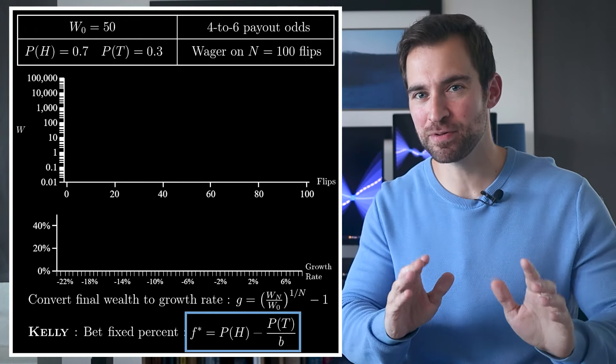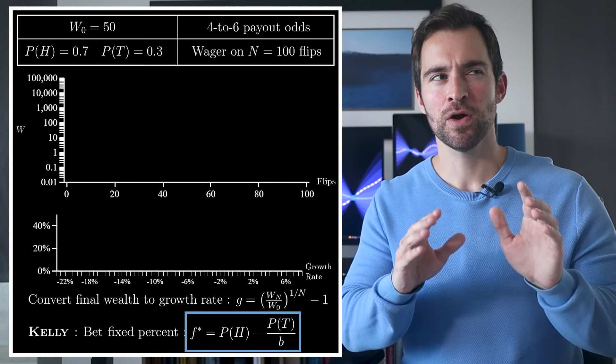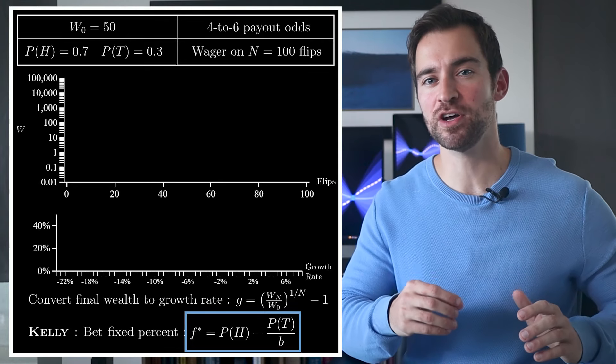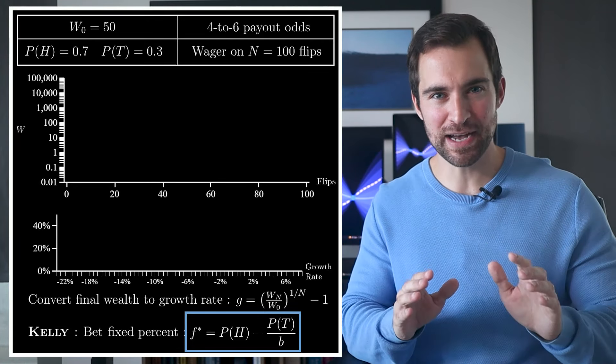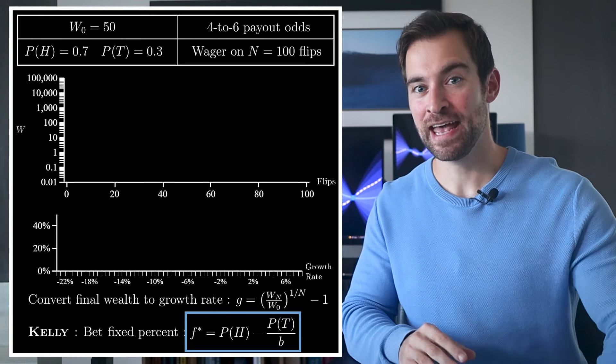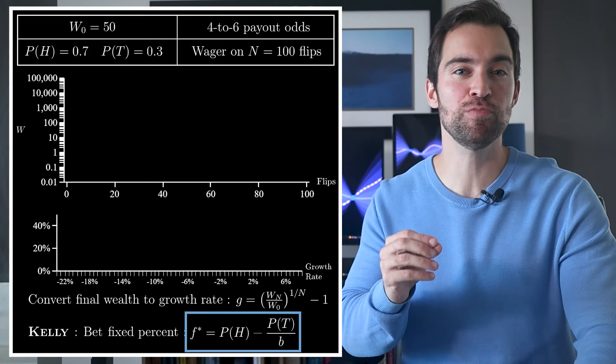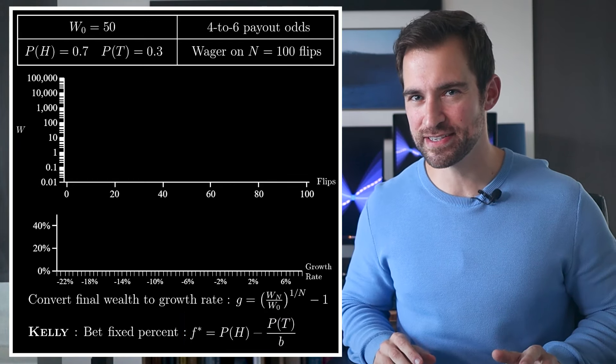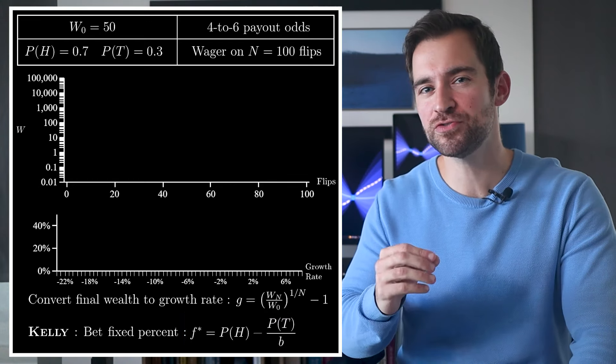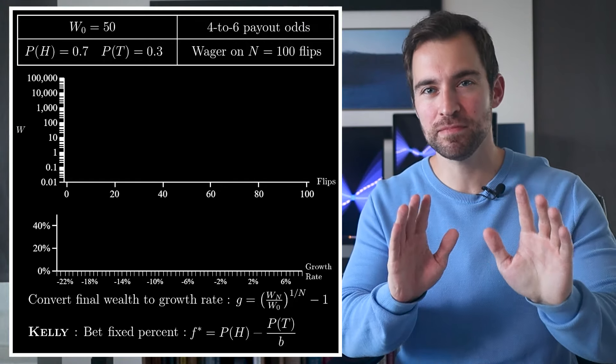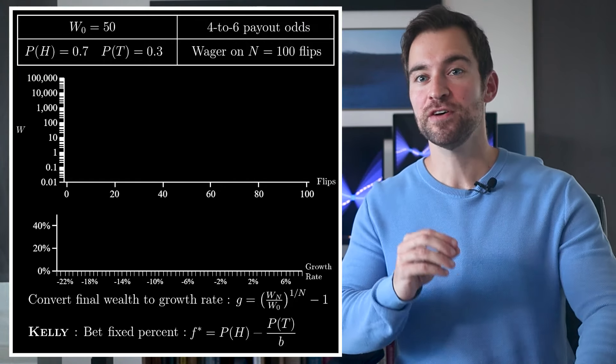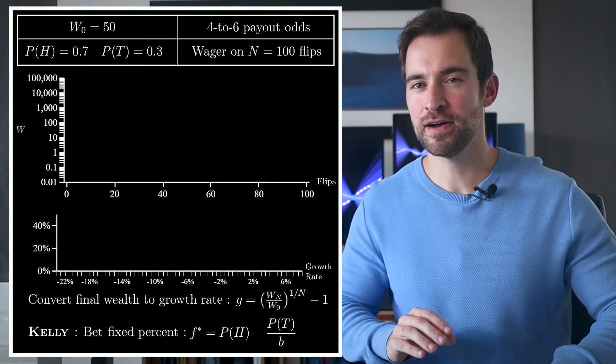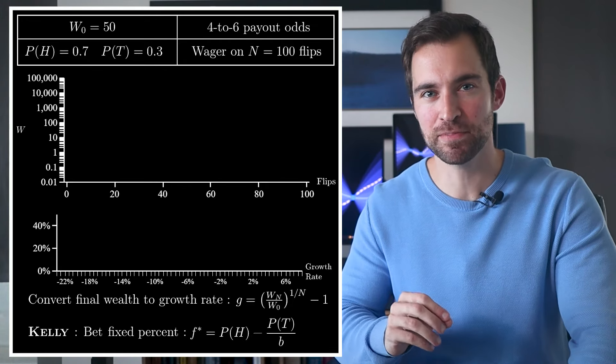However, this almost never applies in the real world. When you're considering betting in reality, you almost never know the true probabilities of whatever outcome is in front of you. At best, you have an estimate. And if you plug in that estimate as the true probability for this equation, you'll run into trouble. Here's a realistic example. Let's say you don't have the true probability of heads, but you'll estimate it. So for the first 10 flips, you won't bet anything, you'll just collect data.